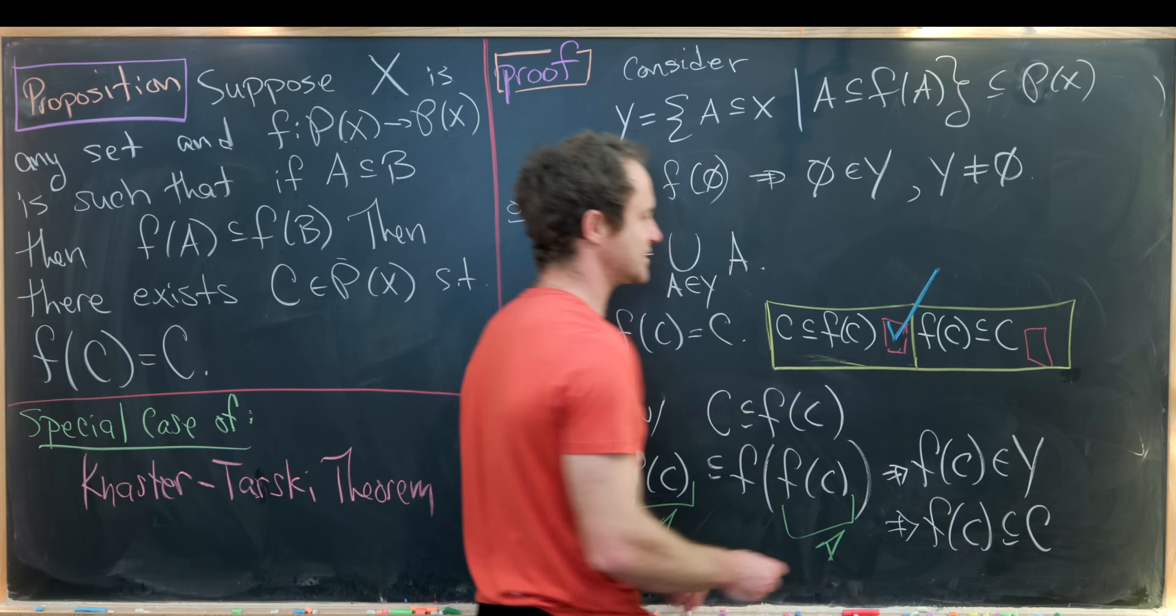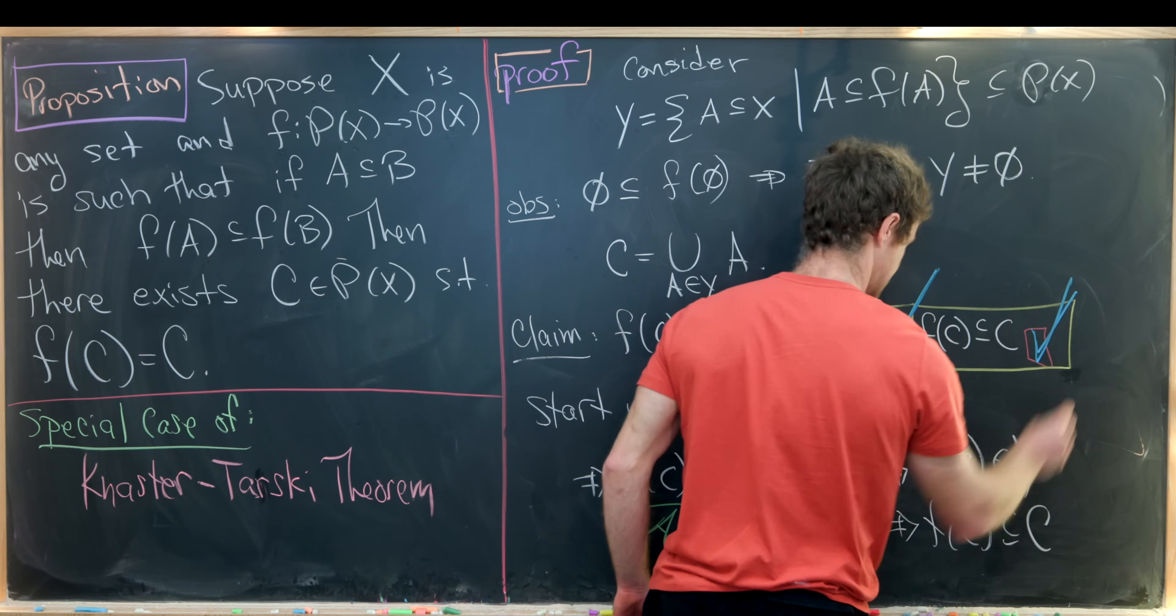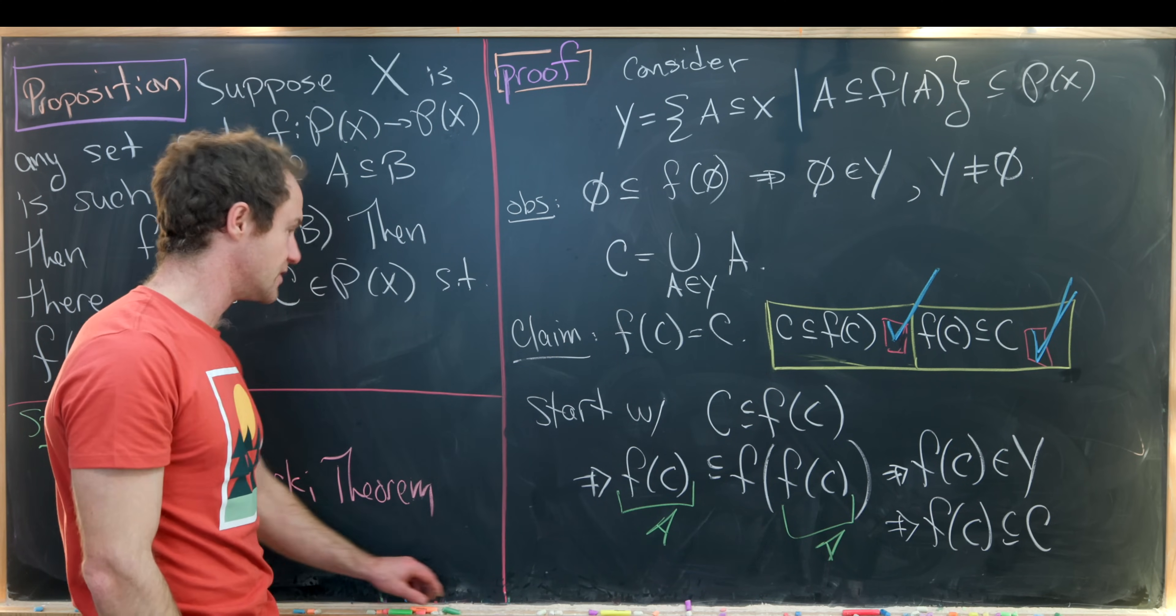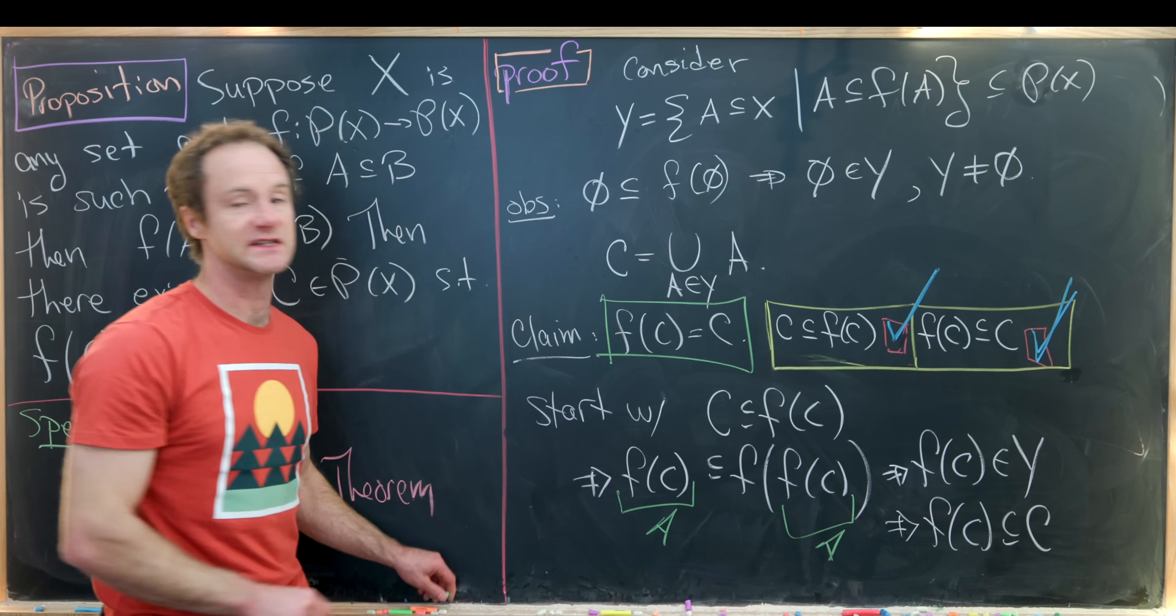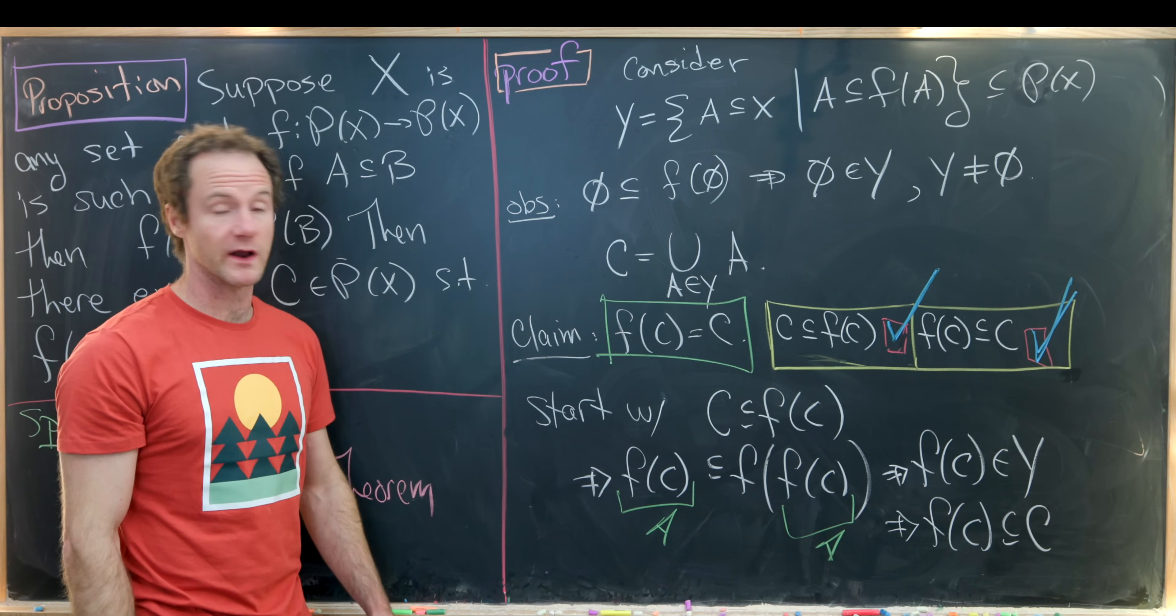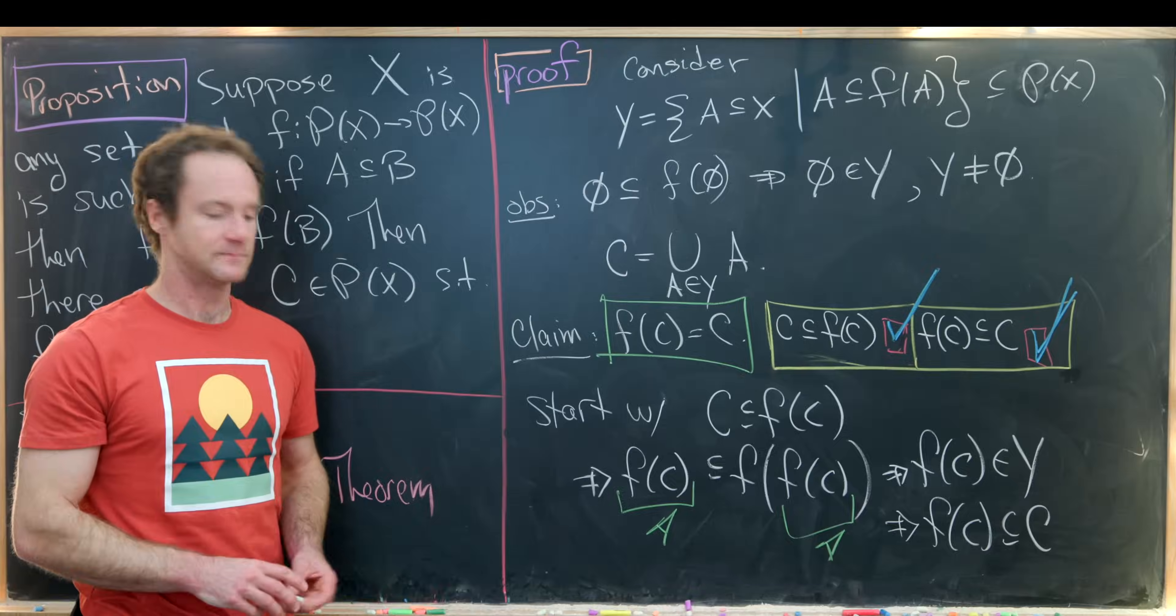So that finishes this reverse containment. And then these two containments put together is exactly what we need for f of c to be equal to c. And that's exactly what we wanted. And that's a good place to stop.